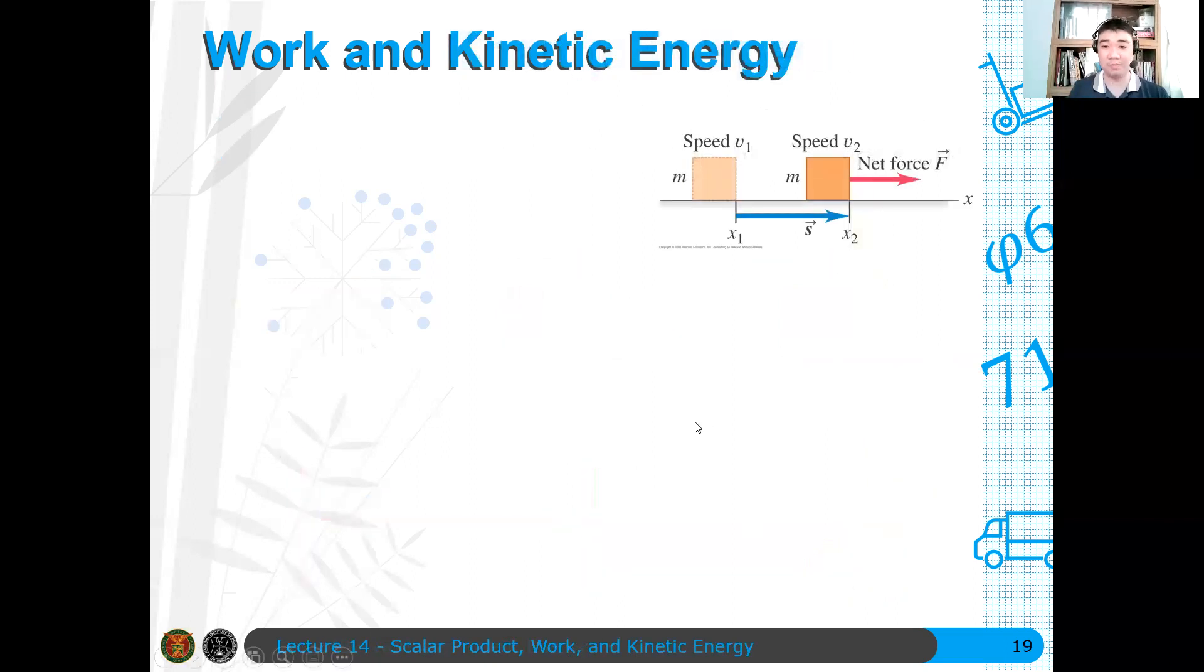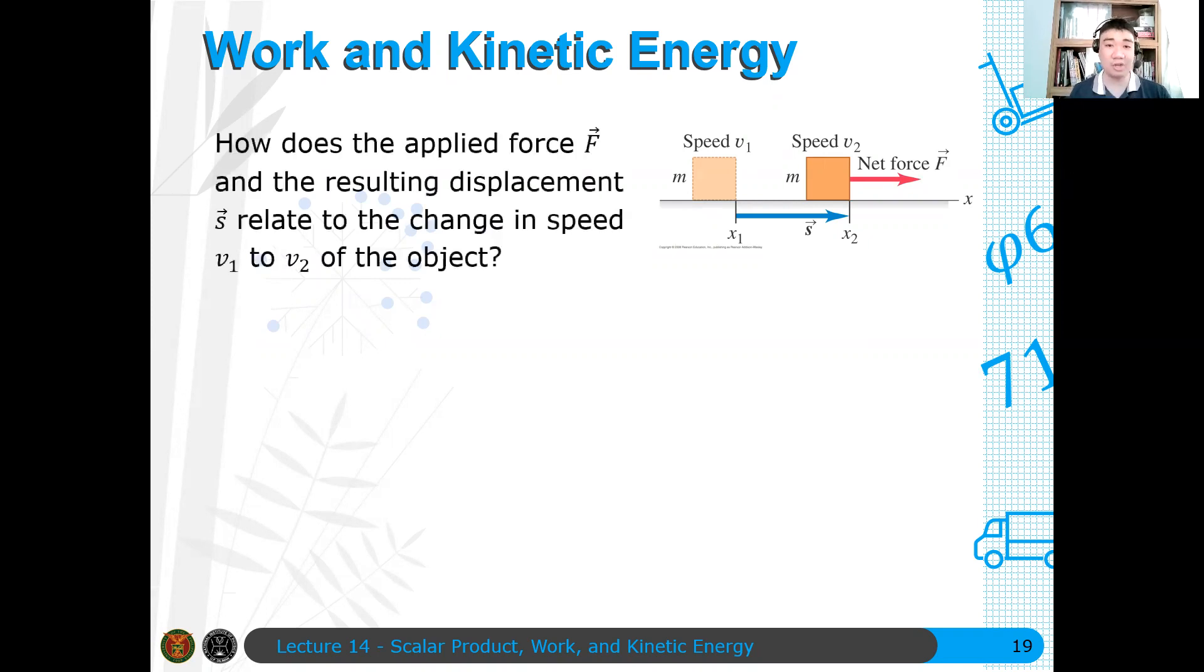Now, work and kinetic energy. Now let's assume, okay, this is a very rough derivation. I will derive something today. So let's say, for instance, a box starts moving from point x1 to x2 and the displacement of that box is s because of some net force F. And we will assume, for the meantime, at least in this derivation, that the force and the displacement are parallel to each other. Para madali. Kasi kung di yan parallel to each other, medyo may complications sa mangyayari. So for the meantime, let us consider first the parallel component of the force, which is the magnitude of force because parallel sila to the displacement. So ang tanong ngayon, how does the applied force F and the resulting displacement s relate to the change in speed v1 to v2 of the object?